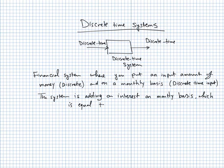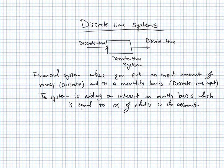That interest is equal to alpha times what's in the account. How can you represent this system in a block diagram? We want to capture this behavior in a system block diagram and then deduce its input-output relation.